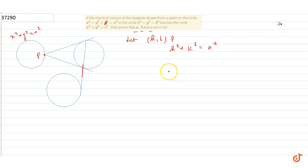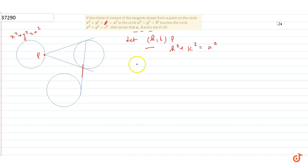Ab, the equation of chord of contact of tangents drawn from this point to the circle x²+y²=b². X² ki jagah hx aur y² ki jagah ky substitute kar dete hain, to equation aa jae gi: hx+ky=b².